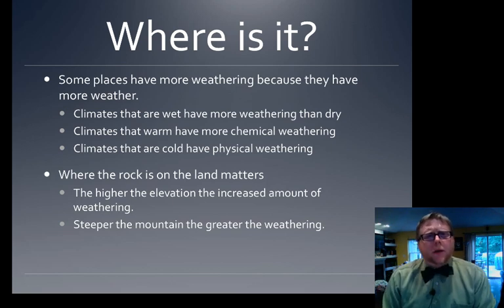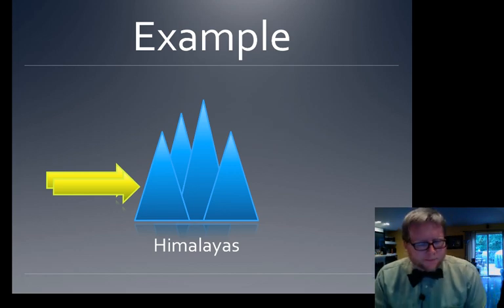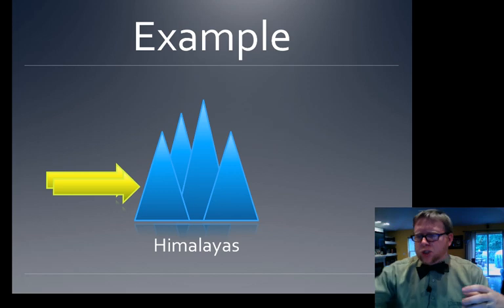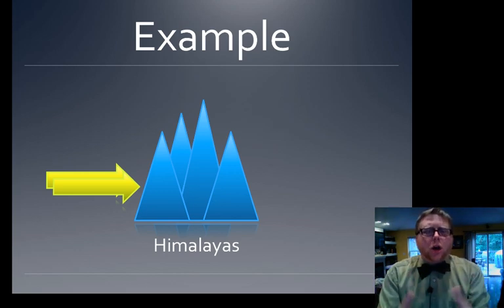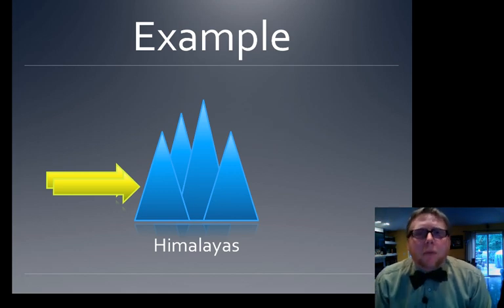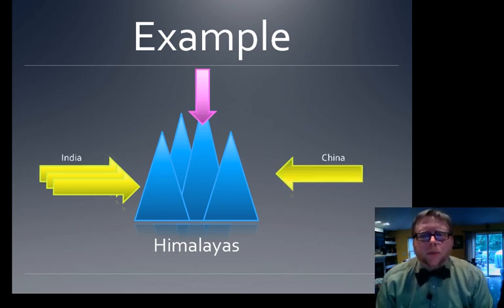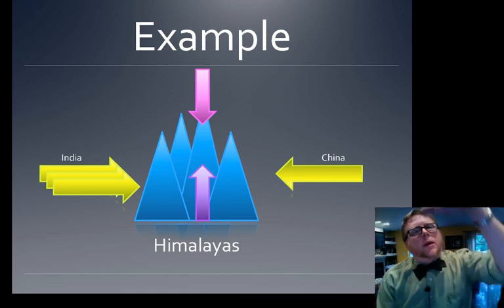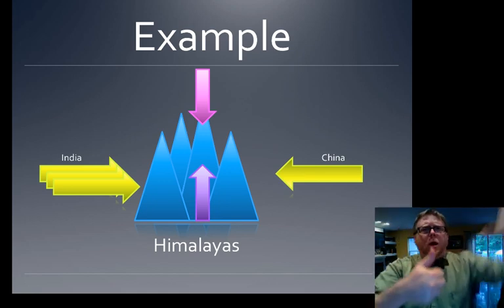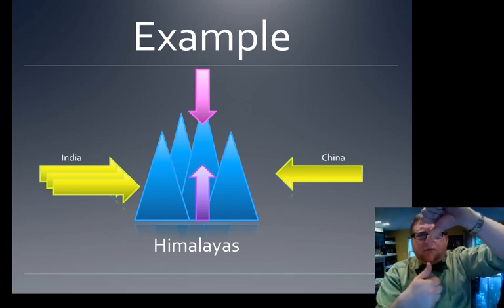A great example is the Himalayas. They're formed at a convergent boundary where India and China are smashing together, thrusting metamorphic rock high into the air. The higher those mountains go, the more weather they receive, which creates more weathering. So we have plate tectonics pushing up and weathering pushing down — they're at odds with each other.